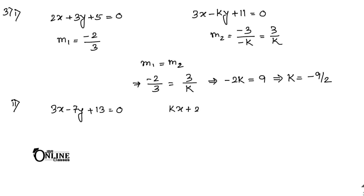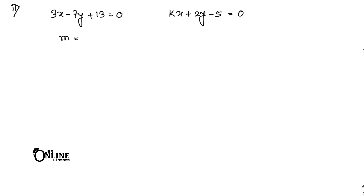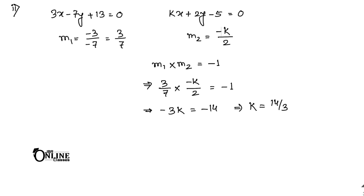Sum 3.2: Lines 3x - 7y + 13 = 0 and kx + 2y - 5 = 0 are perpendicular. Slope m₁ = 3/7, slope m₂ = -k/2. Using m₁ × m₂ = -1: (3/7)×(-k/2) = -1, so -3k = -14, giving k = 14/3.